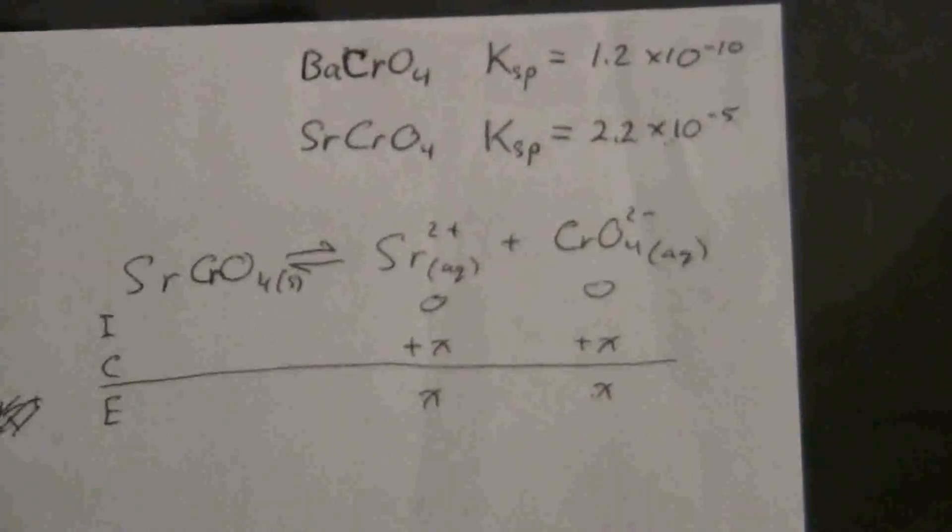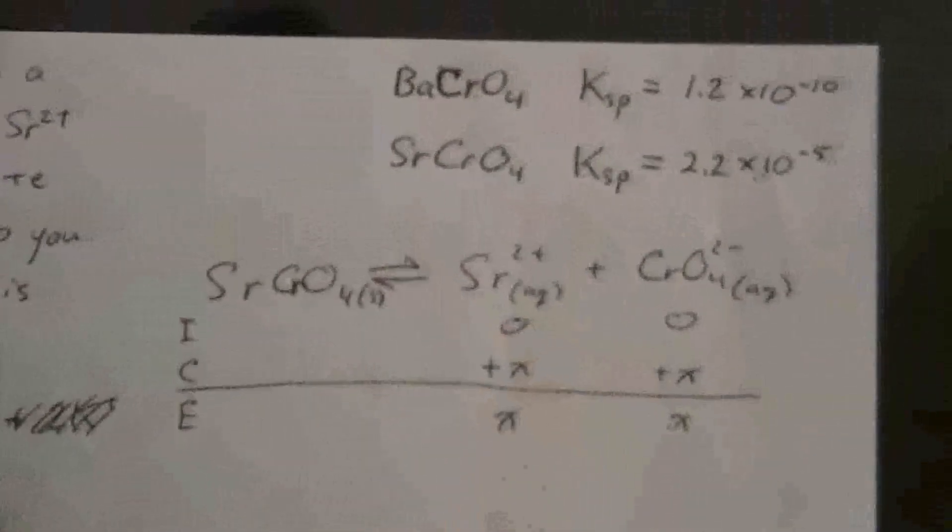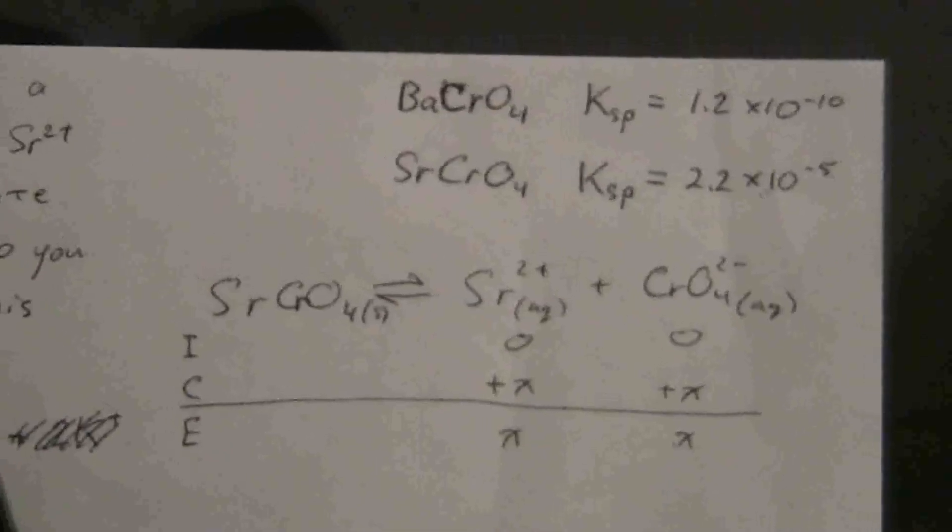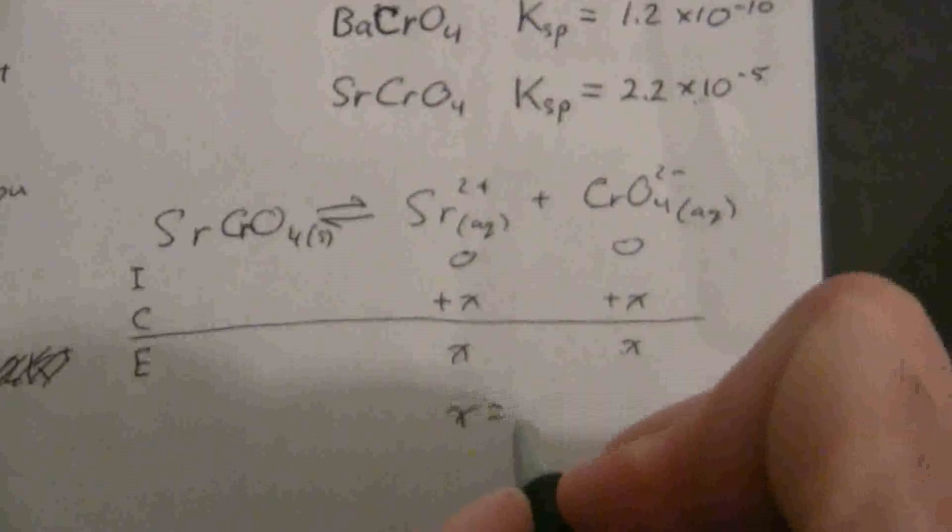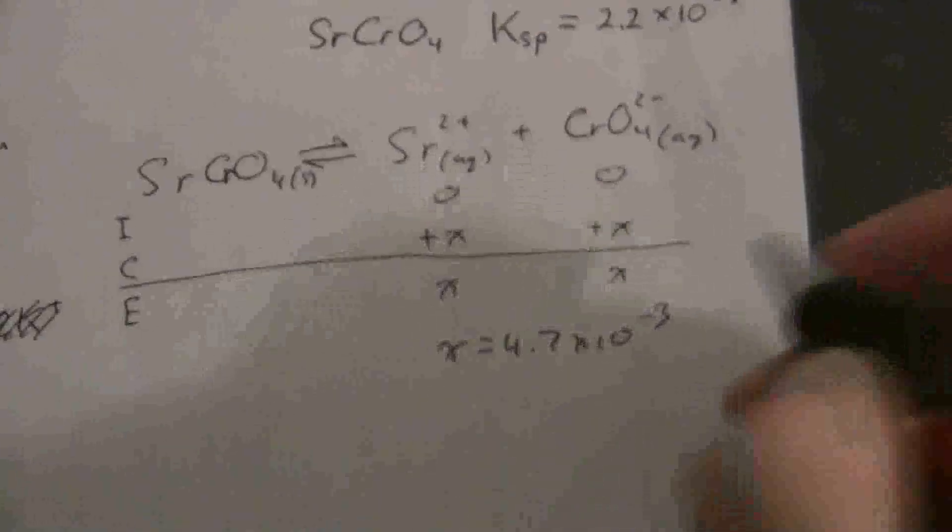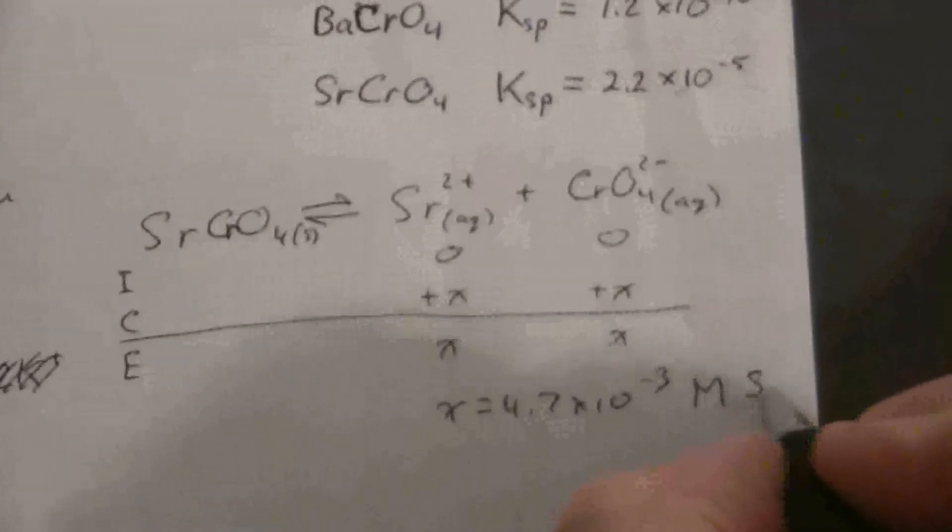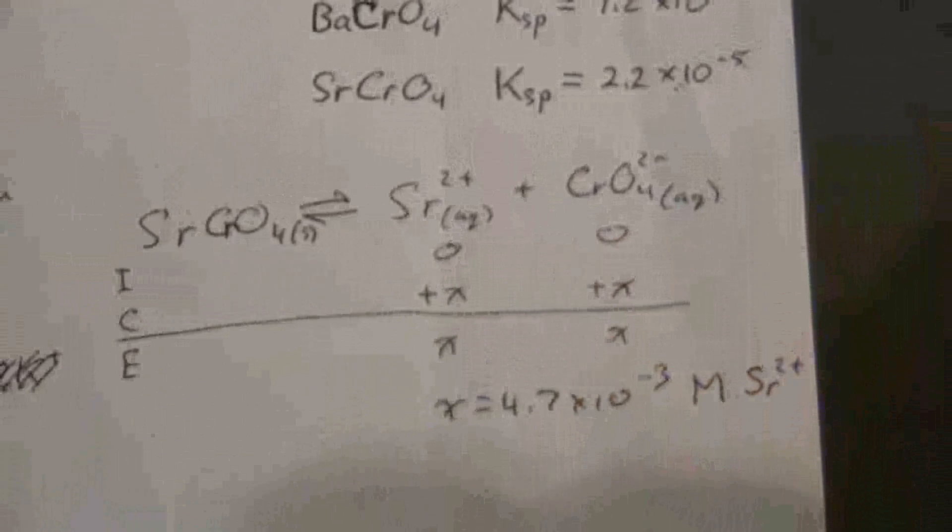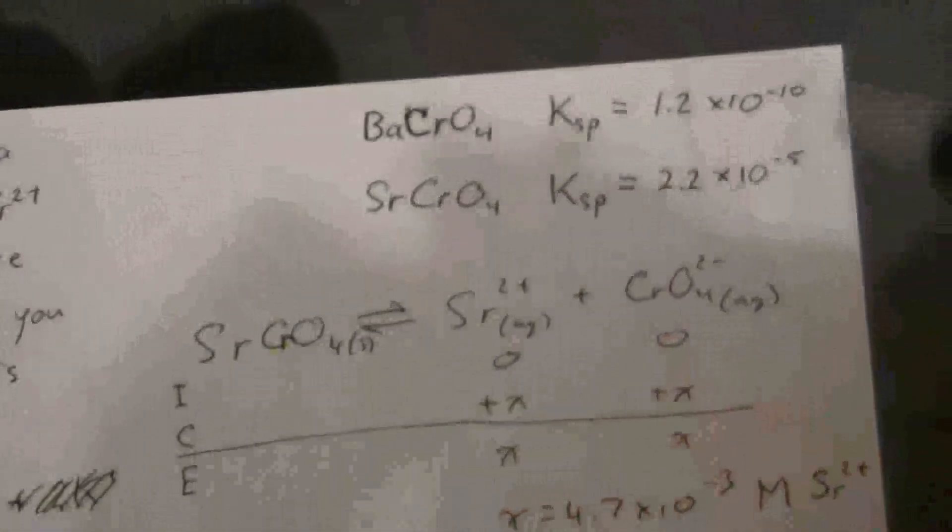So let's just calculate the value here for x, and we have the square root of 2.2 times 10 to the minus 5, and we get that x equals 4.7 times 10 to the minus 3. So that is the concentration of strontium ions, as well as chromate ions, in the solution of that salt.